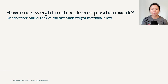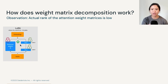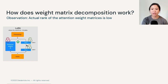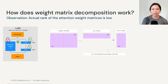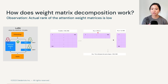So how does weight matrix decomposition work? The observation that inspires LoRA is that the rank of the attention weight matrix change is lower than the actual weight delta matrix. So when we do fine-tuning, we can freeze the pre-trained weights and only update the two lower-rank weight matrices, demonstrated by WA and WB. Let's take a look at a dummy example: say that W_delta has a dimension of 100 times 100. We can decompose that into two smaller matrices — WA with dimension 100 times 2, and WB with dimension 2 times 100.